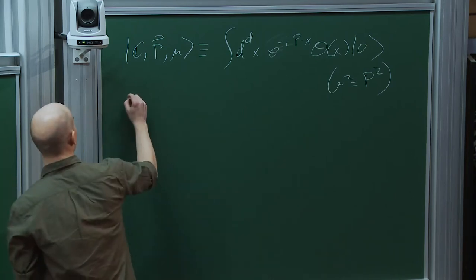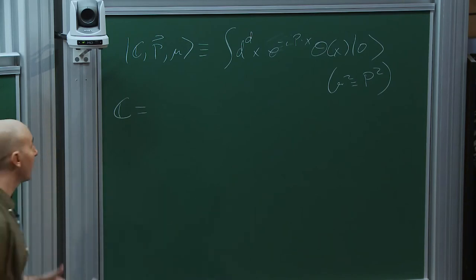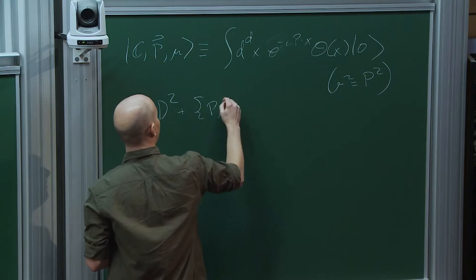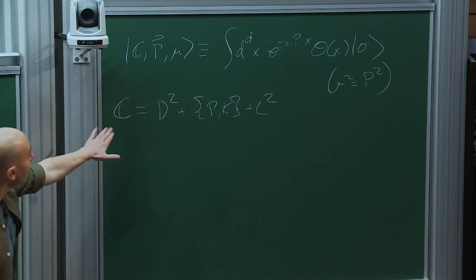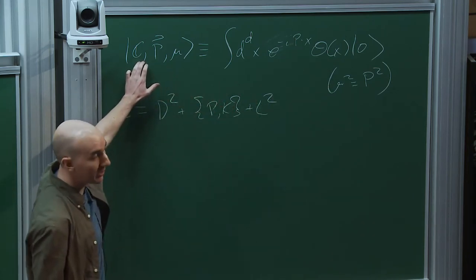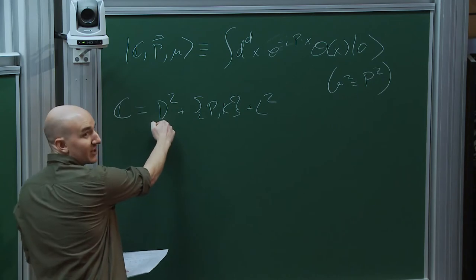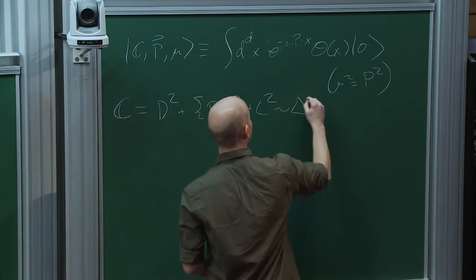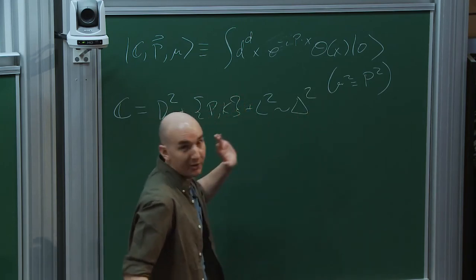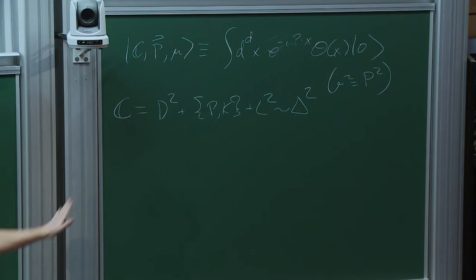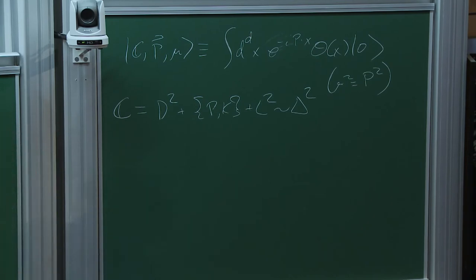The conformal Casimir operator can be written schematically in terms of the generators of the conformal group. Its eigenvalues, for states created by primary operators, are set by the scaling dimension and spin of the associated operator. Because there's a dilatation operator squared in the Casimir, eigenvalues grow like the scaling dimension squared. For this talk, I'll use Casimir and dimension interchangeably, since it's often easier to think in terms of scaling dimension. There are also spin and global symmetry quantum numbers.